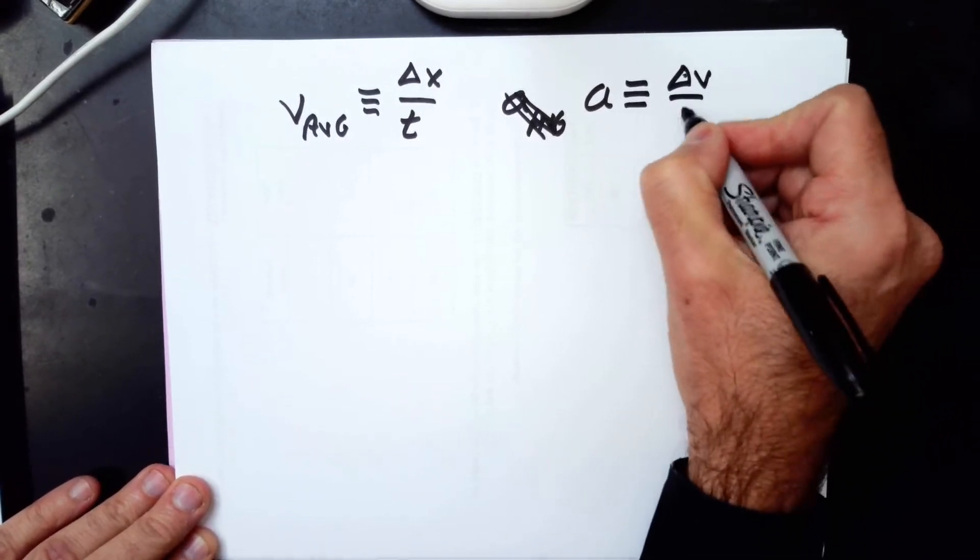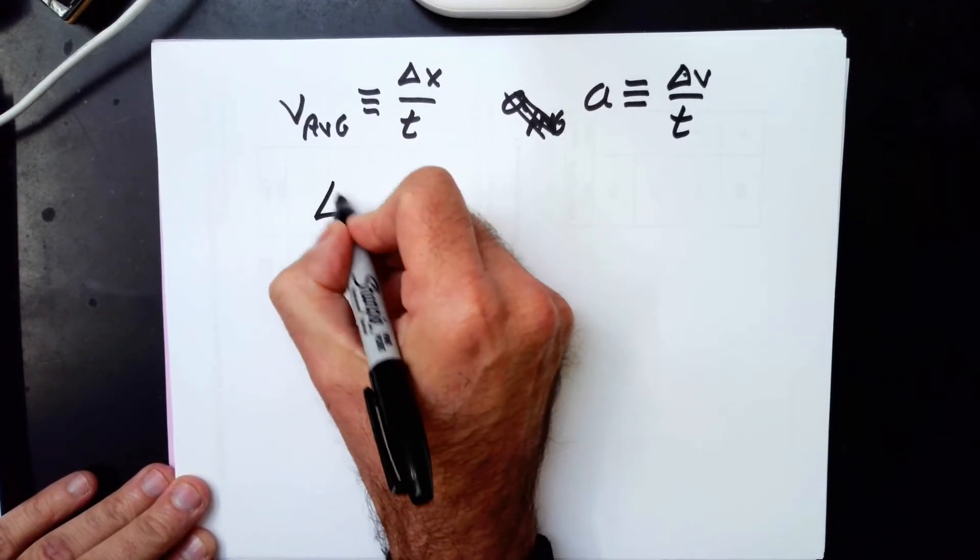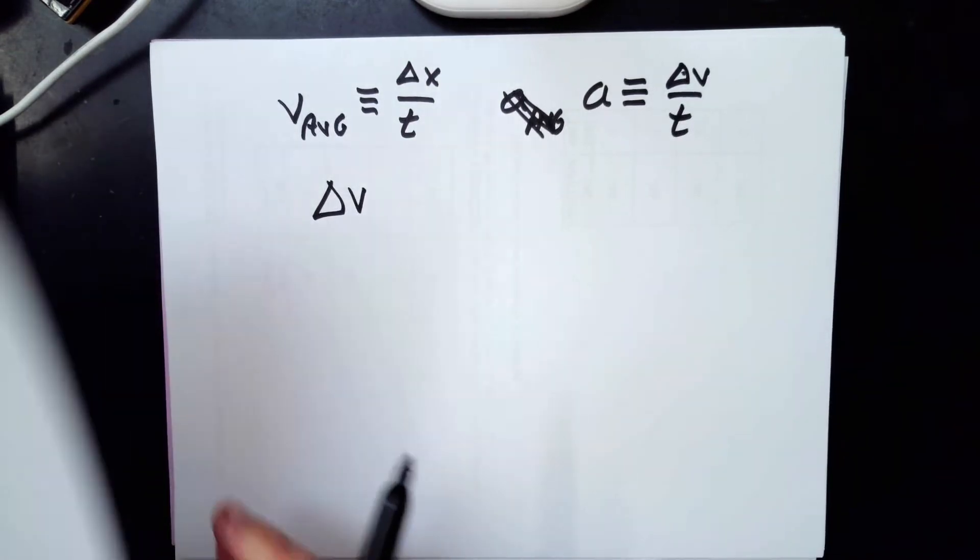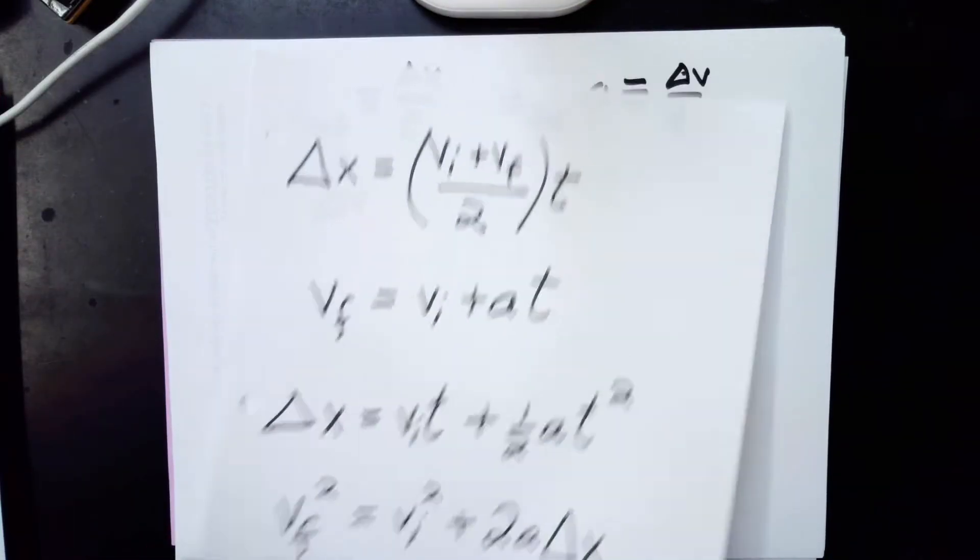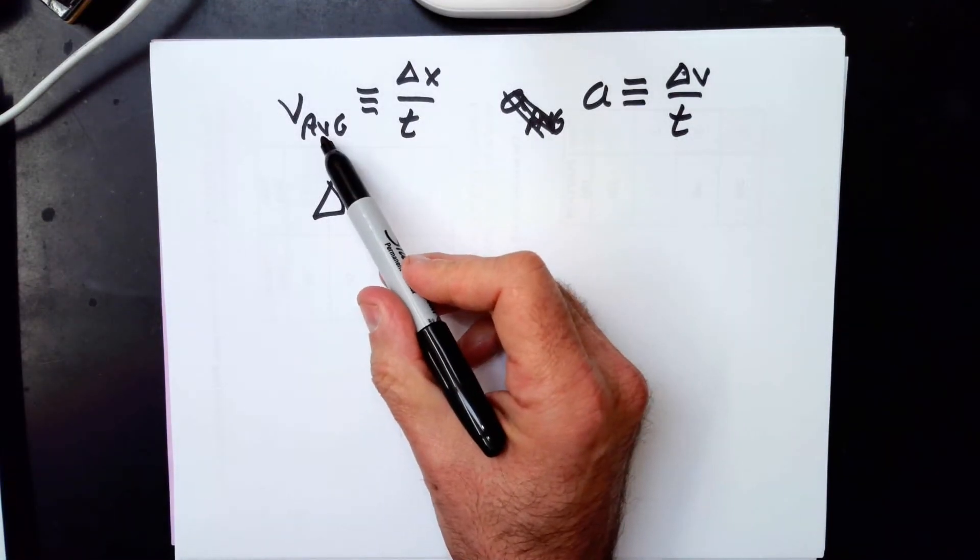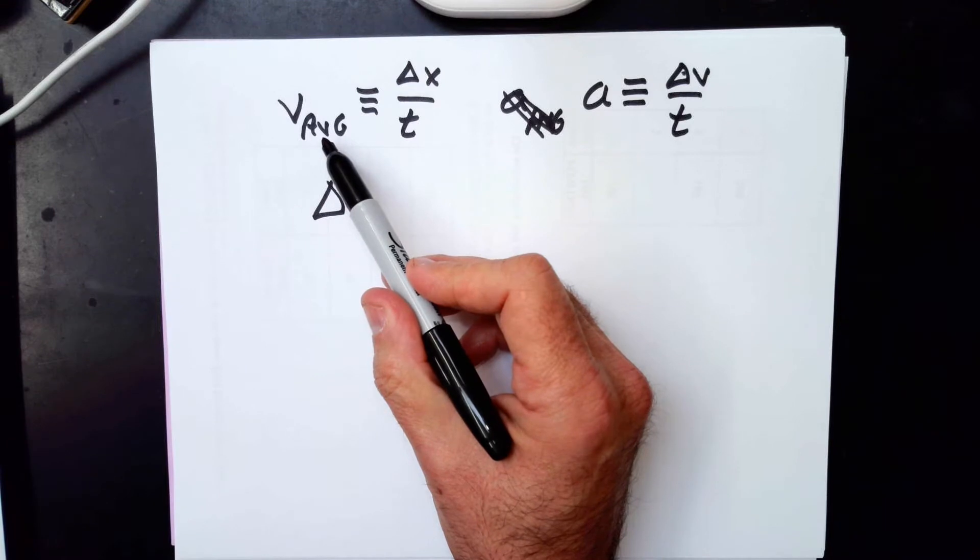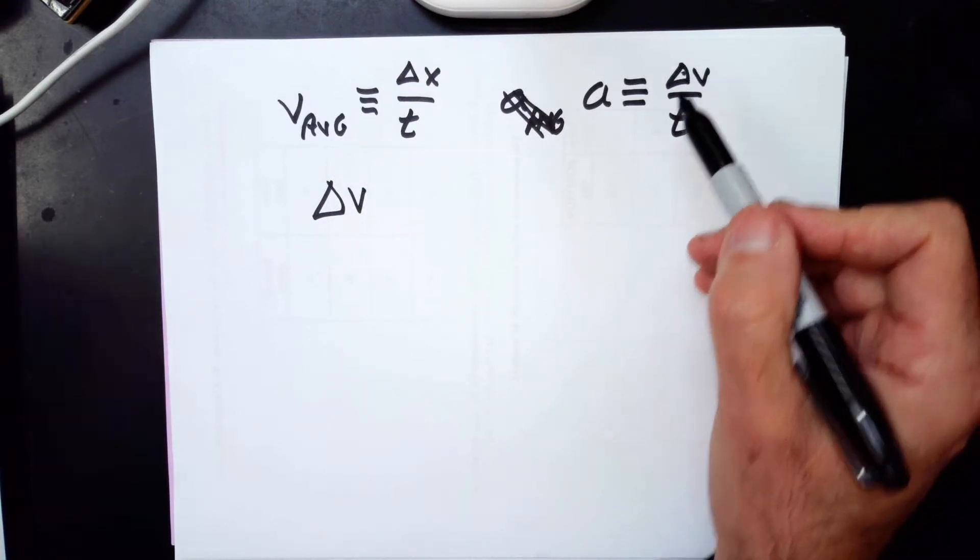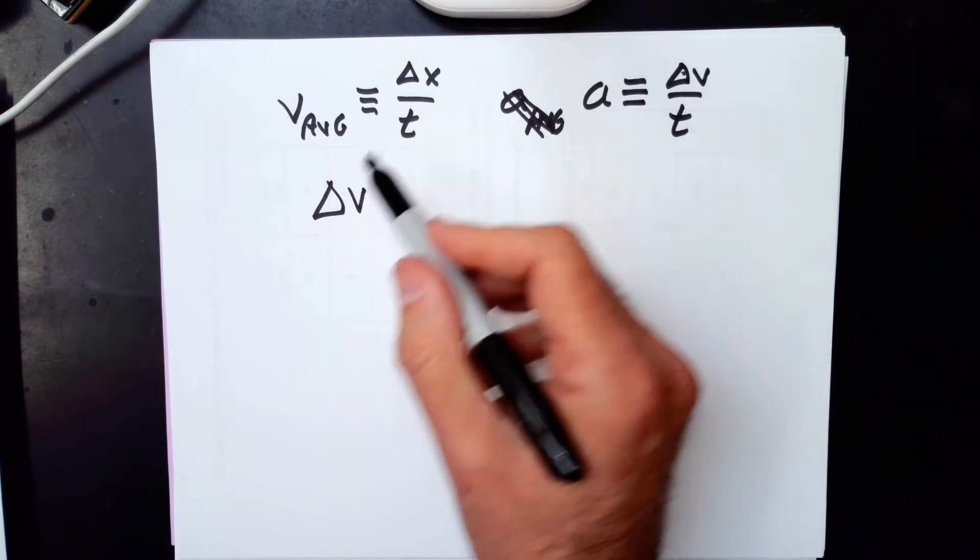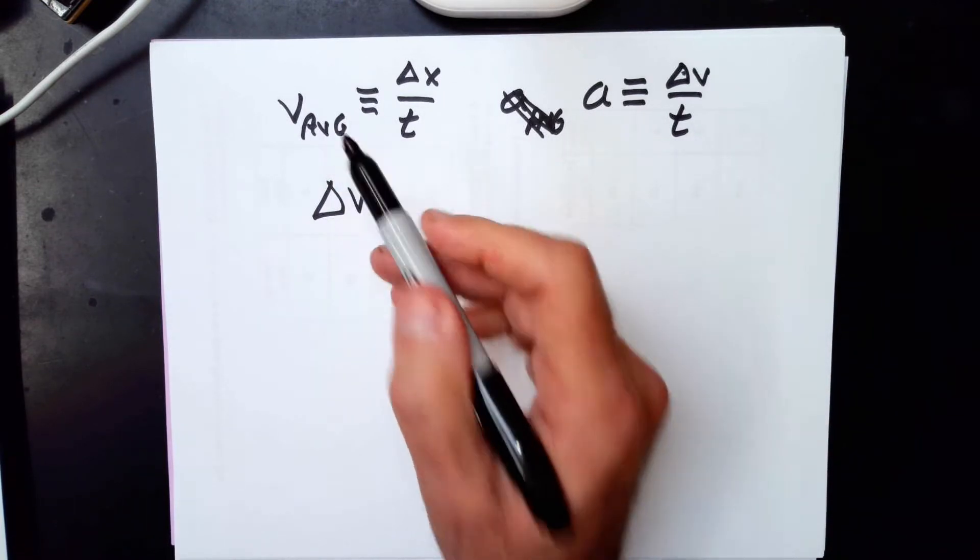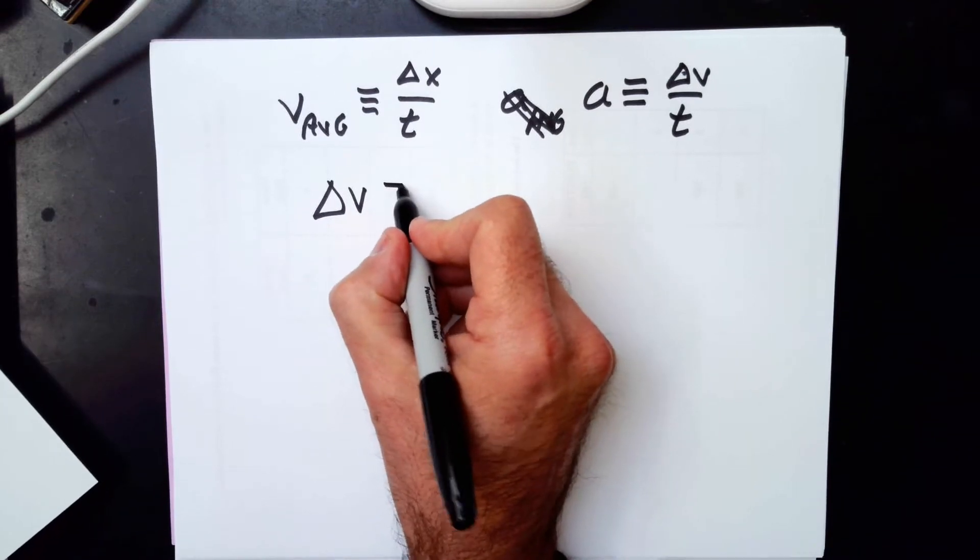Then you also have to know what Δv means, because if you look at our equations, this is the advantage of having them memorized. If you have our equations memorized, you should instantly realize, wait, v average is not in our equations. Δv is not in our equations. So we want to combine what you have here, what's given in a way that gets rid of these things that are not in our equations.